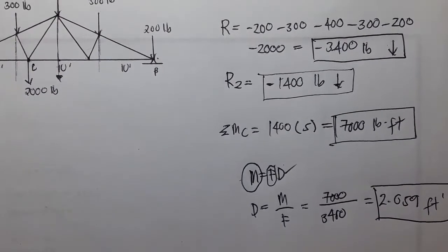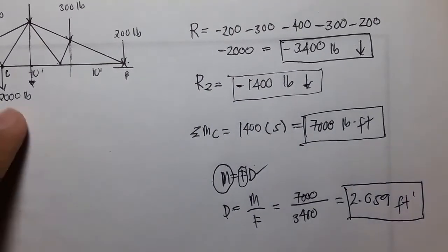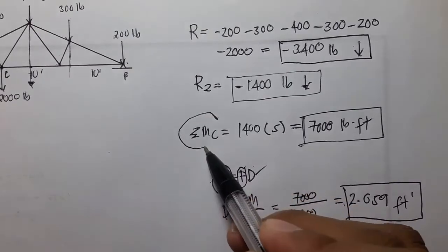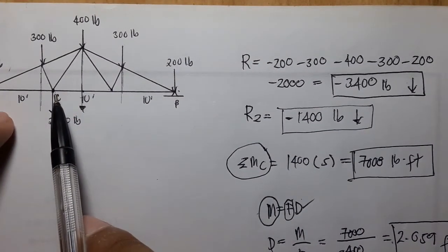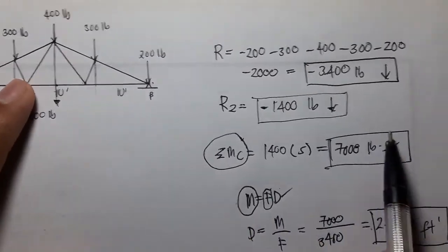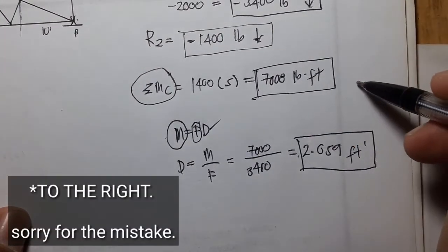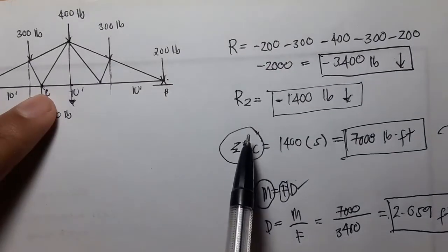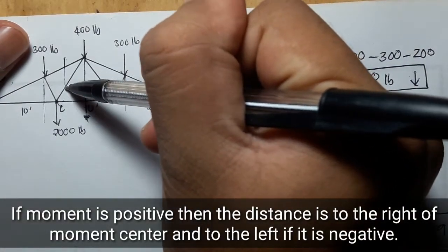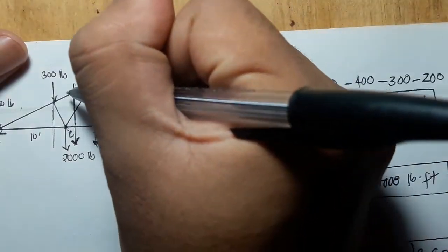Now remember: if we have a positive moment, that means the distance is to the right of our moment center. Our moment center is at point C, so the location of the resultant 3400 pounds is 2.059 feet to the right of point C. This is the location of our 3400-pound resultant.